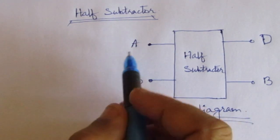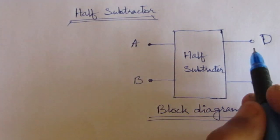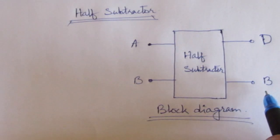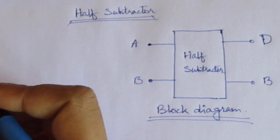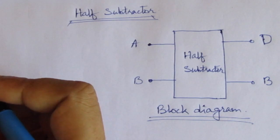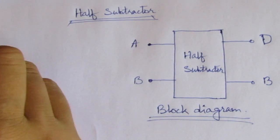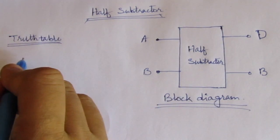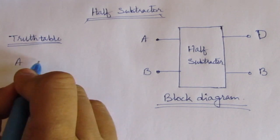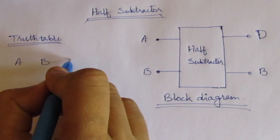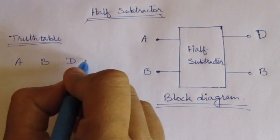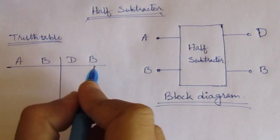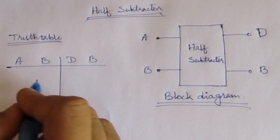These are the two inputs A and B, and we have two outputs: difference and borrow. So, let us make the truth table of it. We have two inputs A and B, and two outputs: difference and borrow. For two inputs, we will have four combinations.